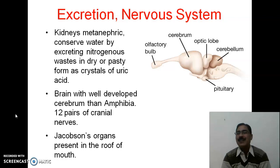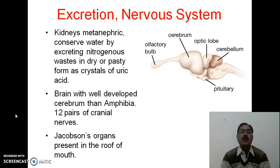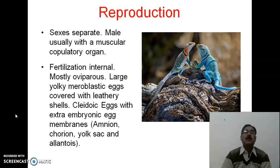The brain is well developed. There are 12 pairs of cranial nerves — compared to 10 pairs in amphibians. The Jacobson's organ is present in some reptiles, located in the roof of the mouth.